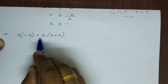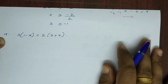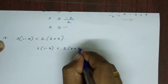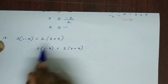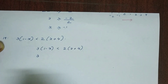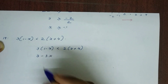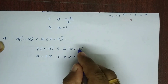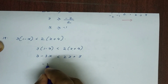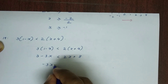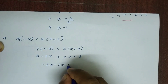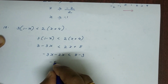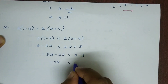19th question: 3 into 1 minus x is less than 2 into x plus 4. Expanding: 3 minus 3x is less than 2x plus 8. Moving x terms to one side: minus 3x minus 2x is less than 8 minus 3, giving minus 5x is less than 5.